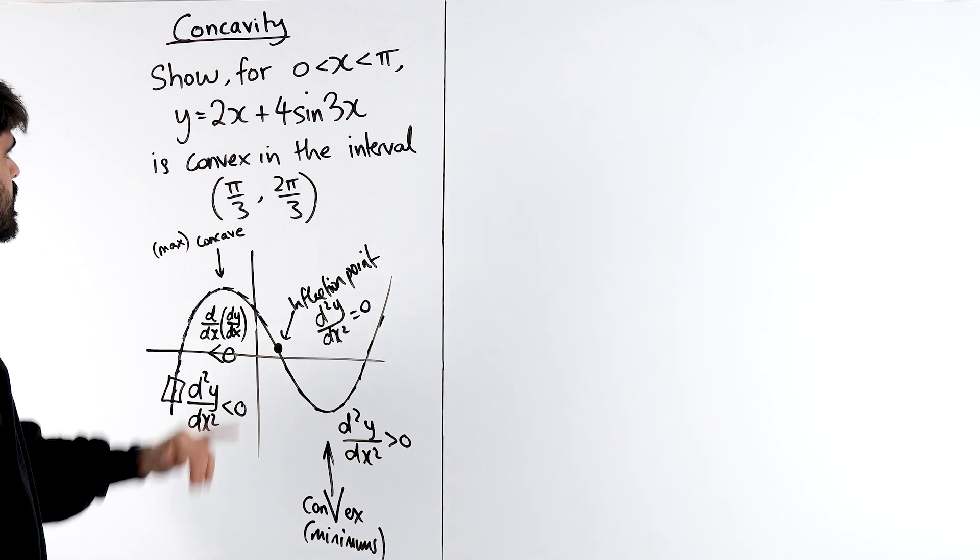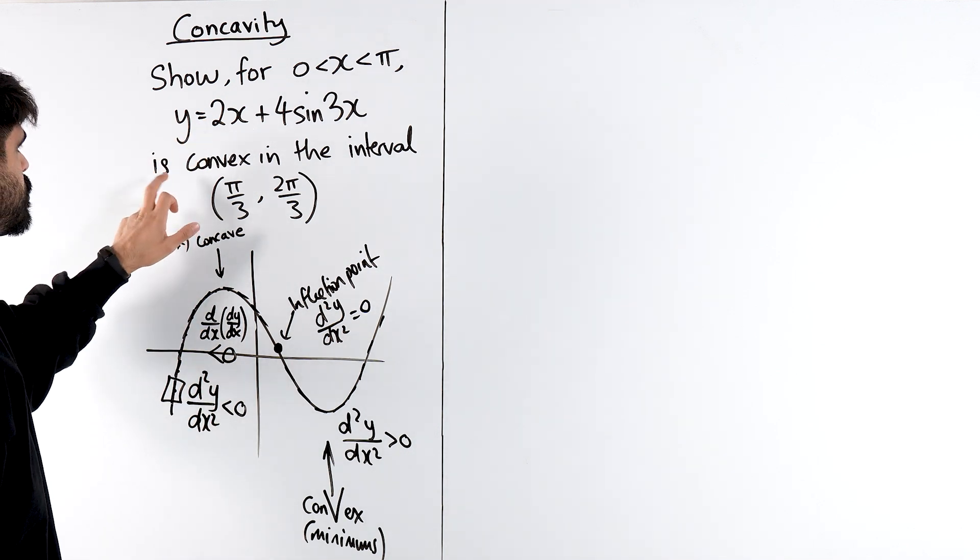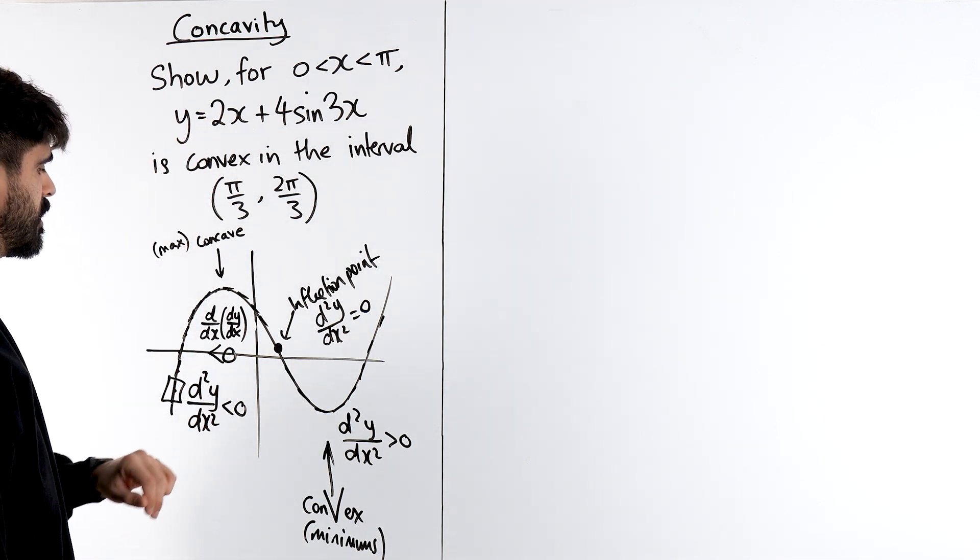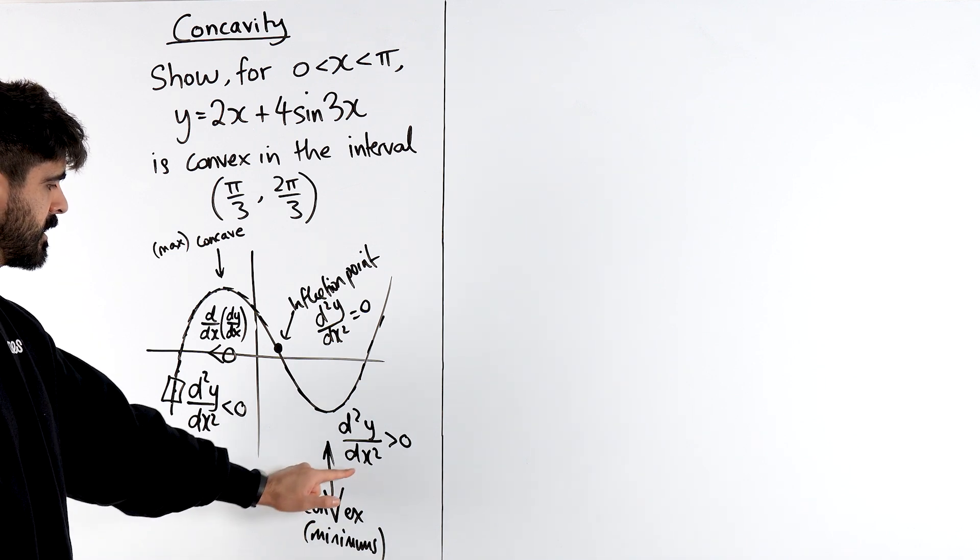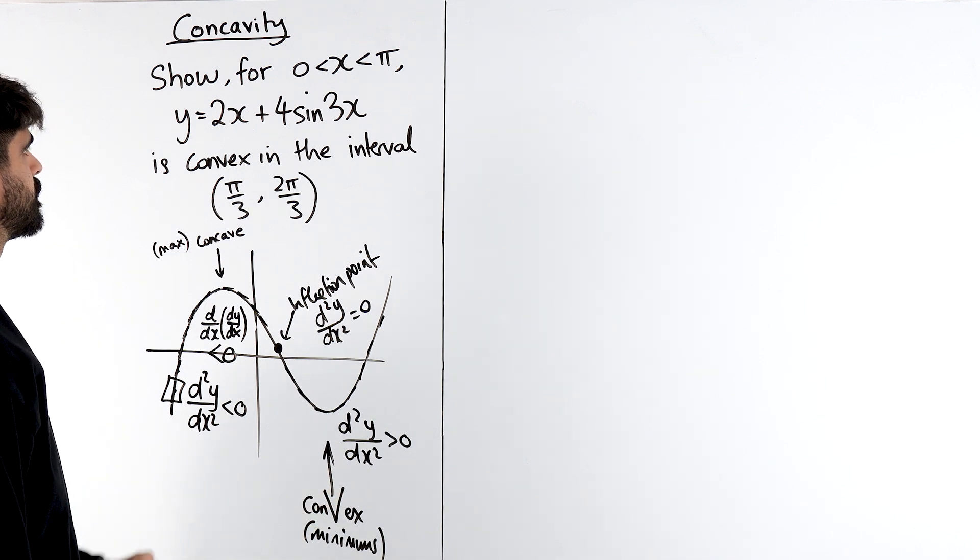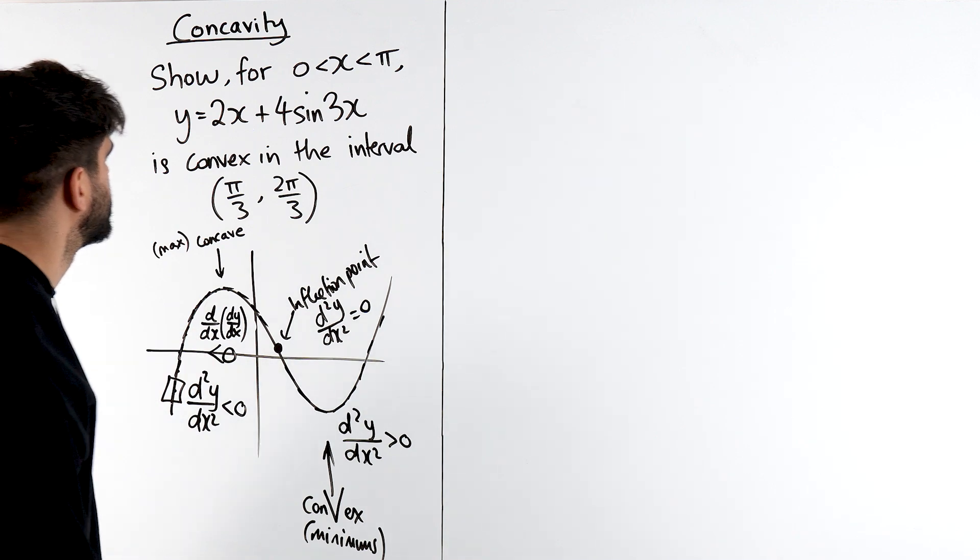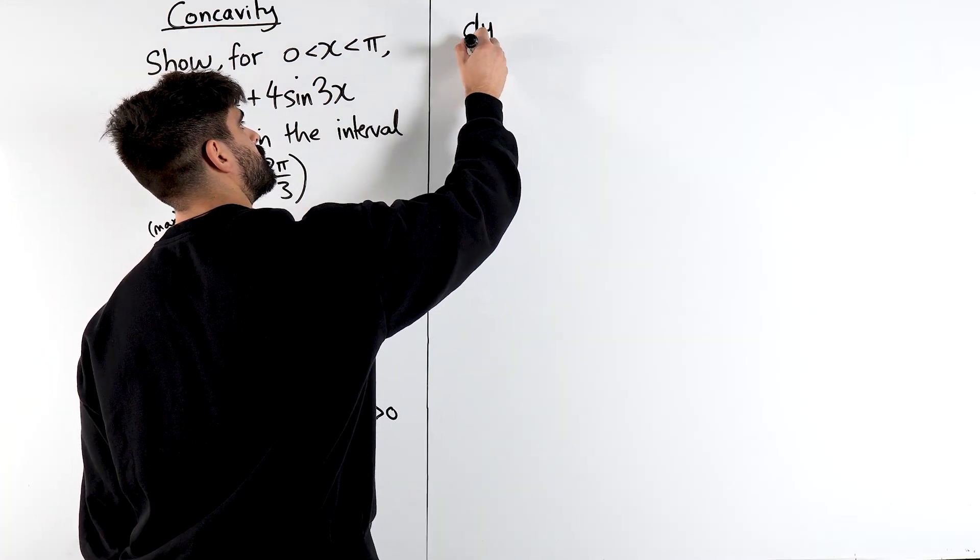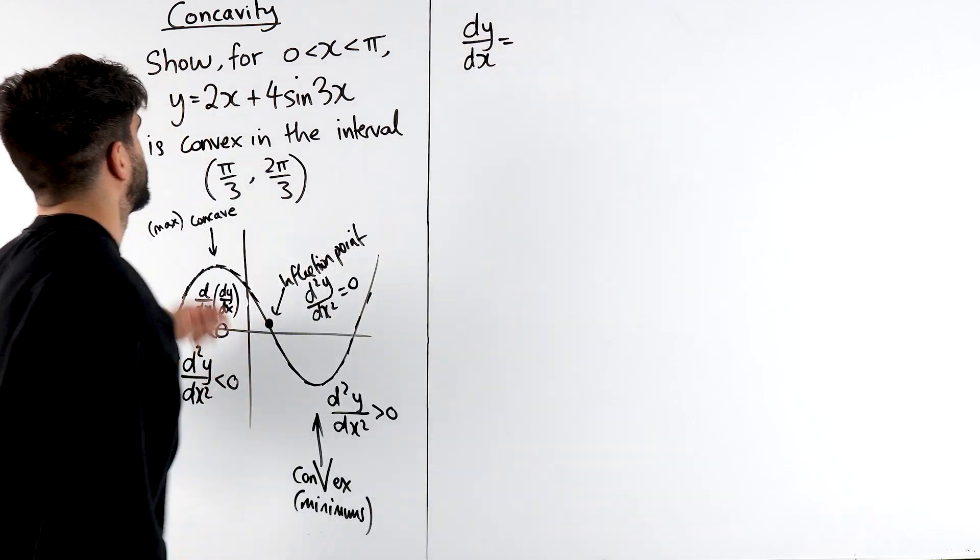So these are definitions. Now let's take a look at this question. Show that it's convex in this interval. Convex, second derivative, positive. Okay, so let's differentiate this.